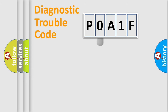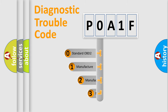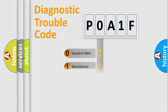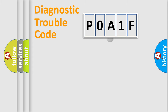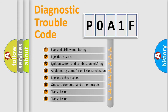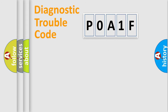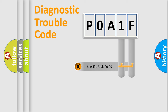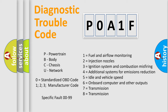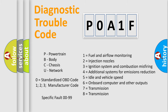This distribution is defined in the first character of the code. If the second character is expressed as zero, it is a standardized error. In the case of numbers 1, 2, or 3, it is a car-specific error. The third character specifies a subset of errors. This distribution is valid only for the standardized DTC code, and only the last two characters define the specific fault of the group.